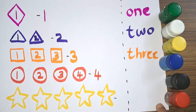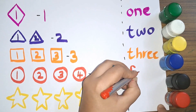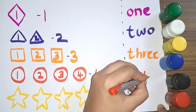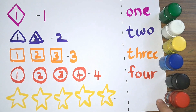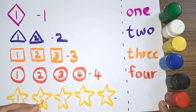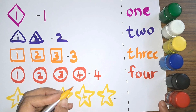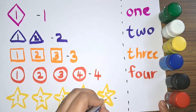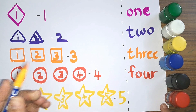Let's write the spelling number name of four. Four — F, O, U, R — four. Number four. Next we have stars. Let's count. How many stars do we have? One, two, three, four, five. We have five stars. Number five.